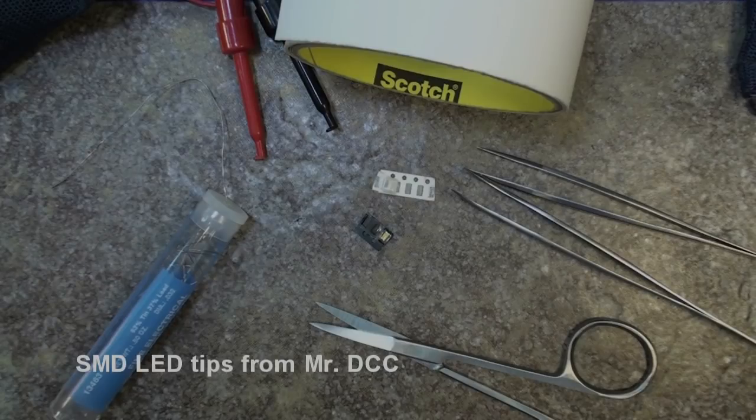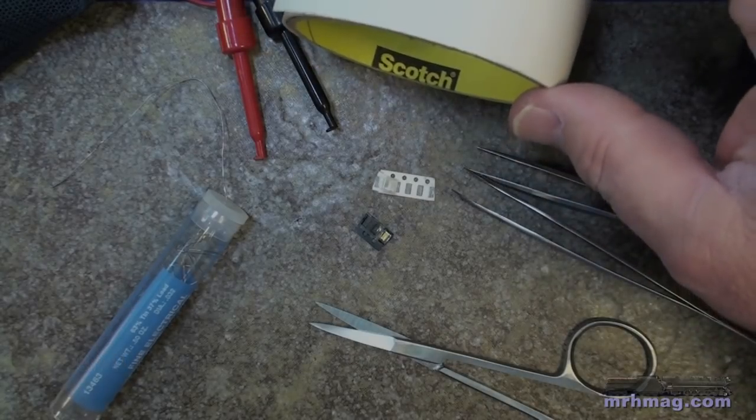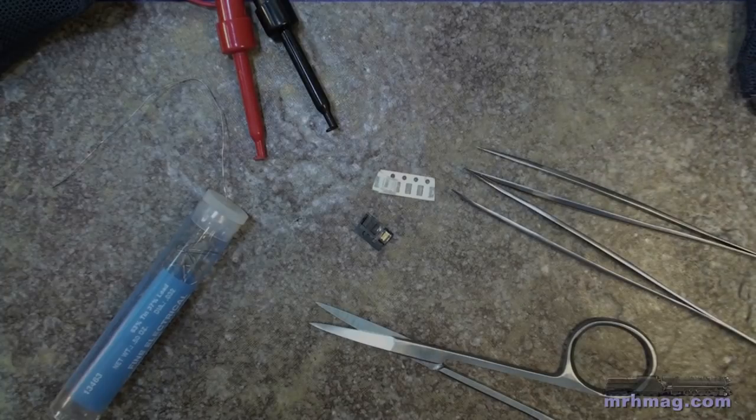Welcome back to the shop, Bruce here. We're going to talk now about how to tame the great white LEDs, surface mount that is. Okay, we've got some scotch carpet tape here, set that off to the side.